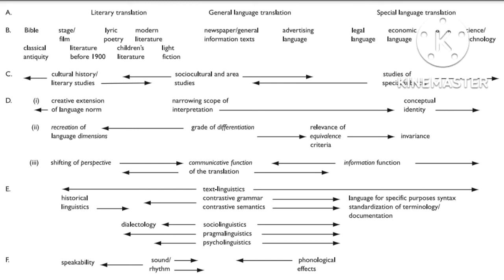Level E covers areas of linguistics relevant to translation, such as text linguistics, contrastive grammar, contrastive semantics, sociolinguistics, pragmalinguistics, psycholinguistics, and so on.